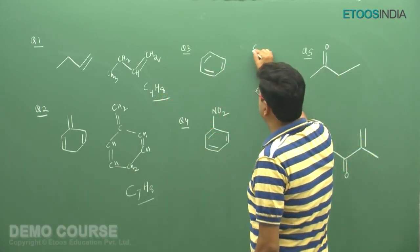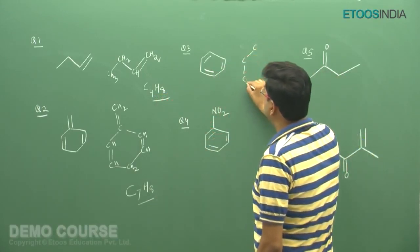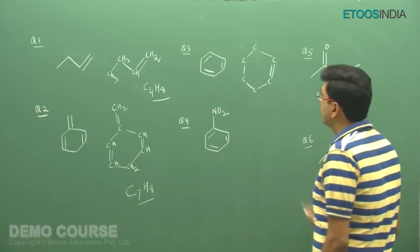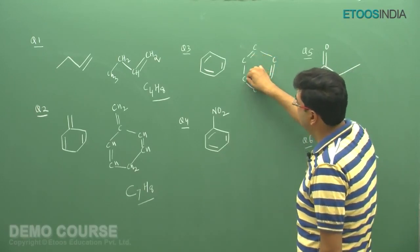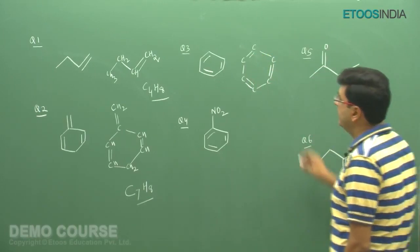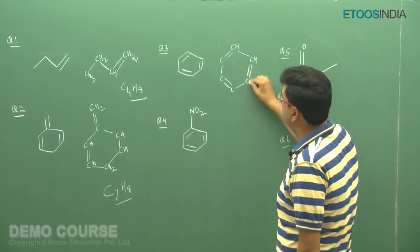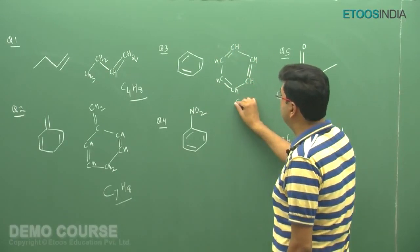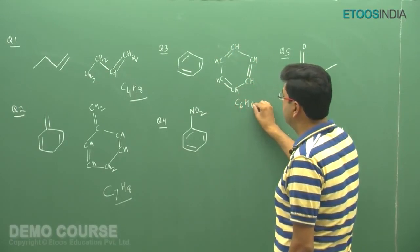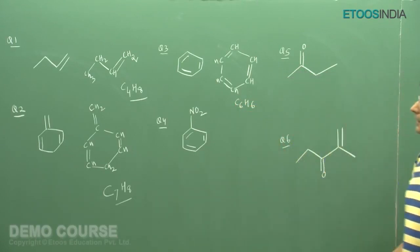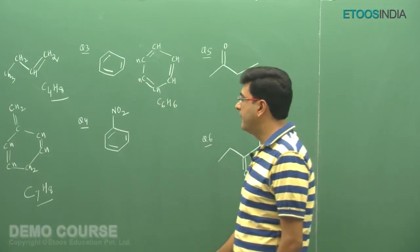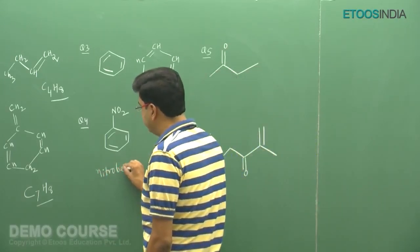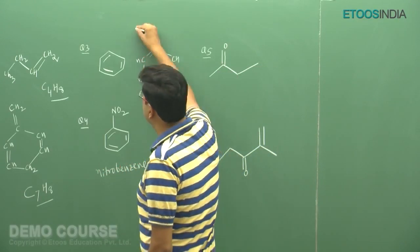This next structure is a very common one — the structure of benzene. Converting the bond line notation, 6 corners represent 6 carbon atoms with alternating double bonds, and valences are satisfied by hydrogen atoms. The molecular formula of benzene is C6H6. This other structure is the molecular formula for nitrobenzene. Nitrobenzene has a benzene ring with an NO2 group attached.